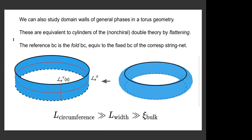We can also study domain walls of general phases — domain walls between the phase and itself — by moving to the torus geometry. In the torus geometry, we have our phase on the surface of the torus with a domain wall that we're tuning, and some reference domain wall on the bottom (which we choose to be the trivial domain wall). This maps to the cylinder we just discussed by flattening in the middle direction, so the domain wall ends up on top where the physical edge was, and on the bottom we have the fold boundary condition. In the bulk it's like the double of the phase.